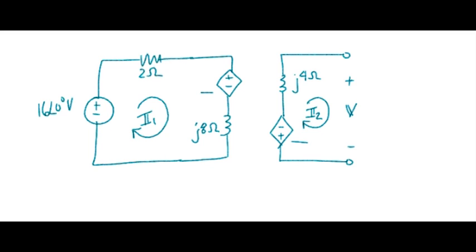So on the leftmost controlled source, the current entering the other dotted terminal is I2. Multiply that by my mutual impedance, that gives me my voltage value. On the other device, the current entering the other dotted terminal is I1, so this is J2 times I1.